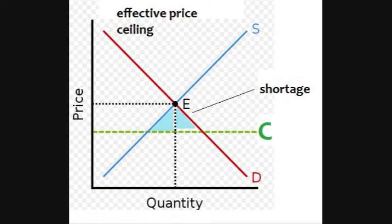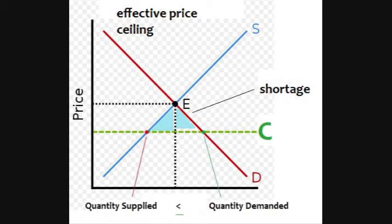Why do shortages occur? Because if we go horizontally on our x and y axes from the left to the right, we cross the supply curve before the demand curve.